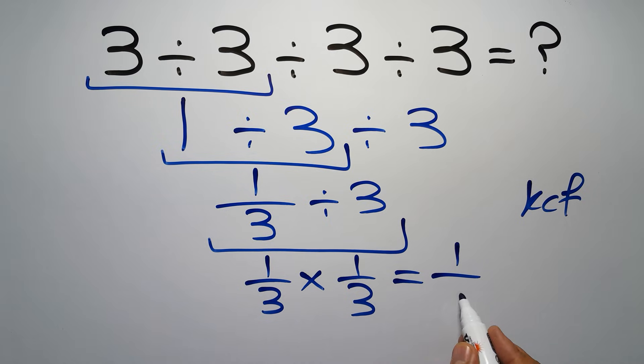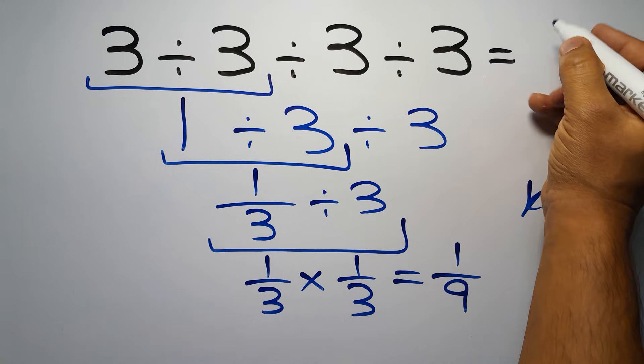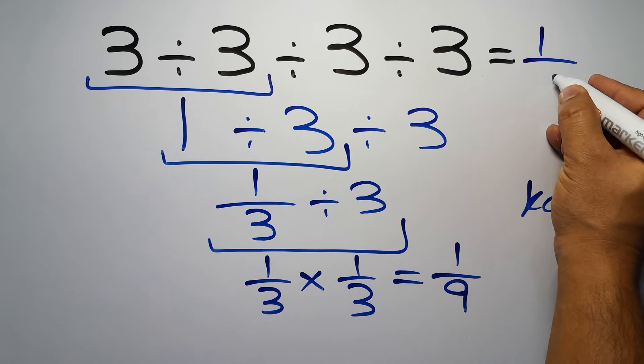So 1 over 3 times 3 equals 9, so we have 1 over 9, and this is our final answer to this problem. The correct answer is 1 over 9.